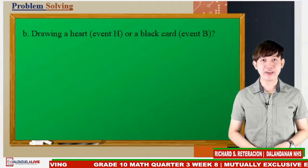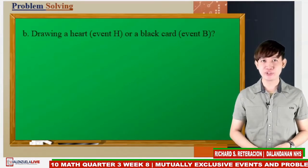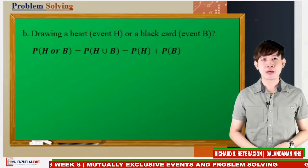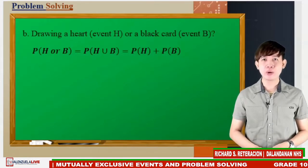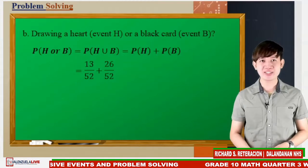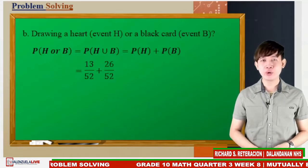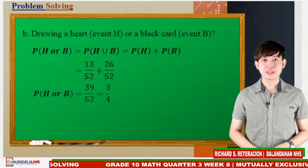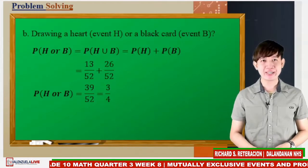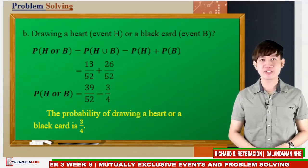Letter B: Drawing a heart as event H or a black card as event B. The question uses the word 'or,' which means union. The probability of drawing a heart or a black card is possible, so we use: probability of H or B equals probability of H plus probability of B. We have 13 cards of hearts and 26 black cards, with 52 total. So we have 13 over 52 plus 26 over 52. The probability of H or B equals 39 over 52, which reduces to 3 fourths. Thus, the probability of drawing a heart or a black card is 3 fourths or 75%.